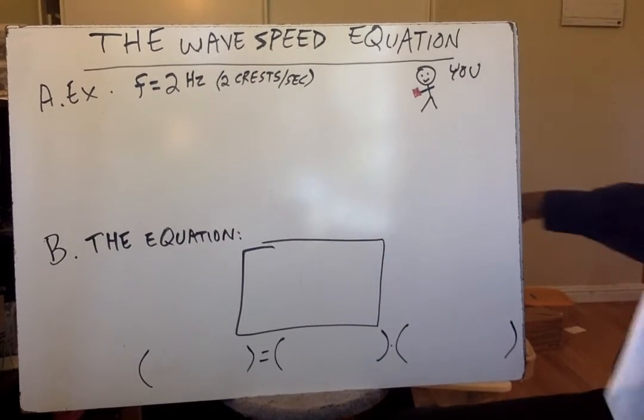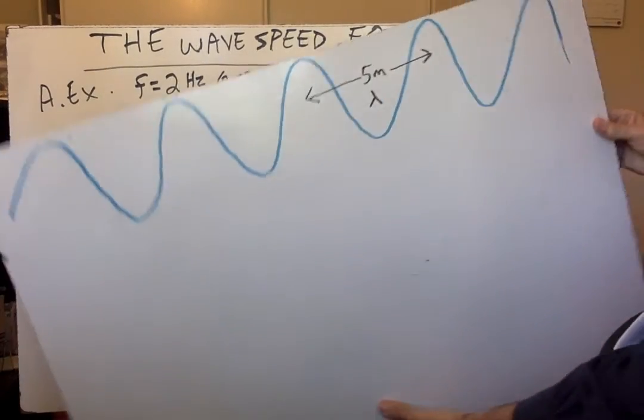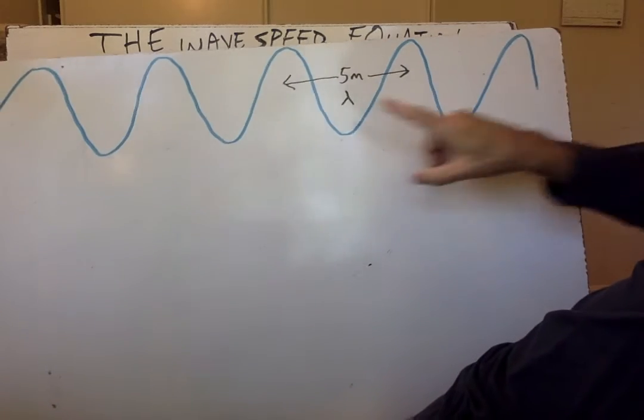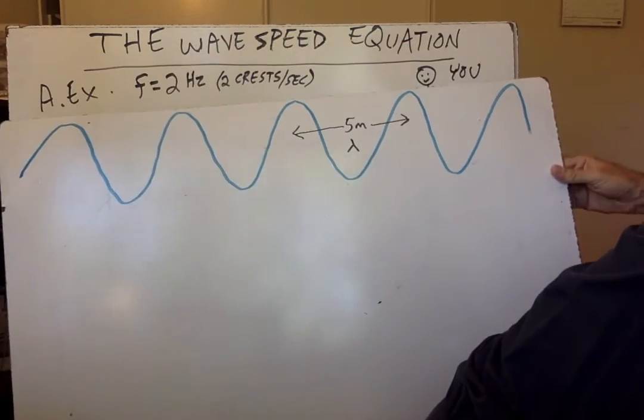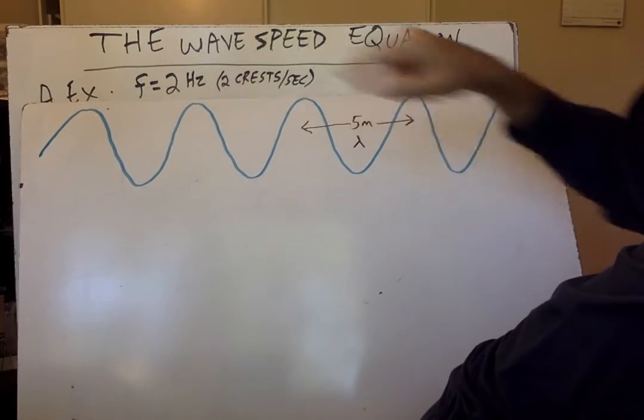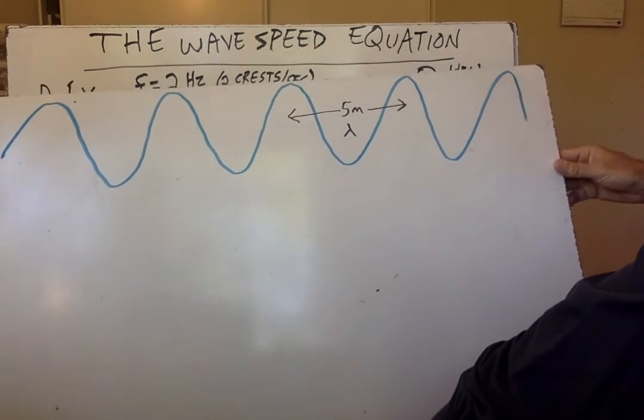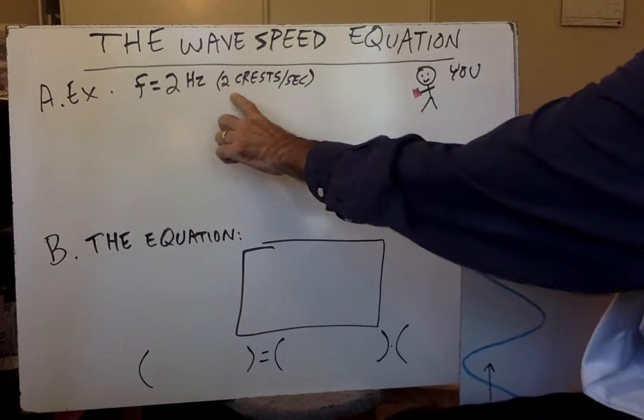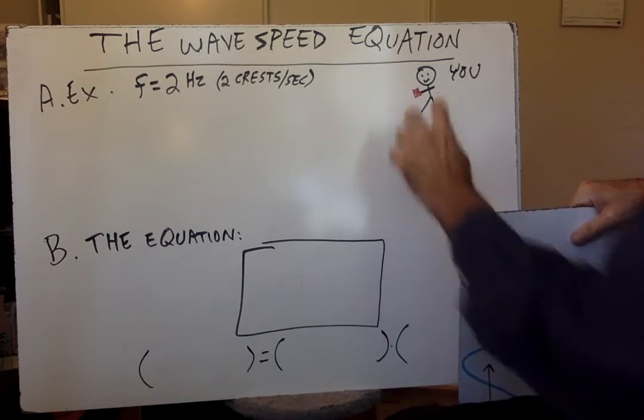So we'll do an example and I've got a sort of crude animation here. Here's a wave and you're given that the wavelength, see the lambda for the wave is 5 meters, 5 meters from crest to crest, and you're told that the frequency of the wave for a person, for you here with your little red timer, is 2 hertz. Now what does that mean for waves? What that means is 2 crests per second pass under you.